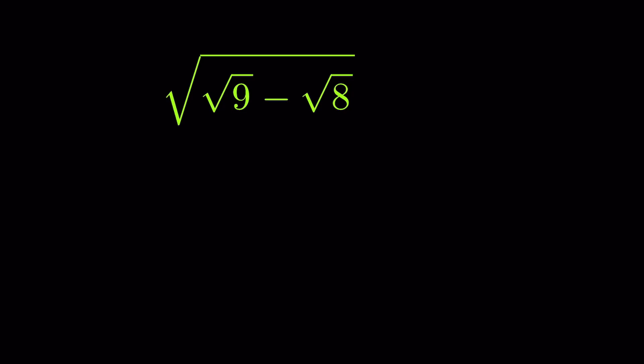Square root of 9 minus square root of 8, all under a square root. We have to simplify. Square root of 9 is 3, so we can write 3 instead of square root of 9.